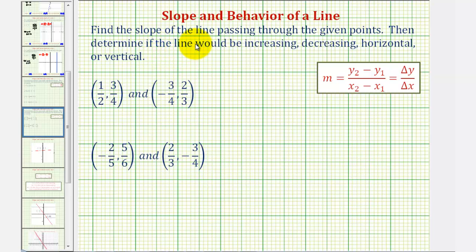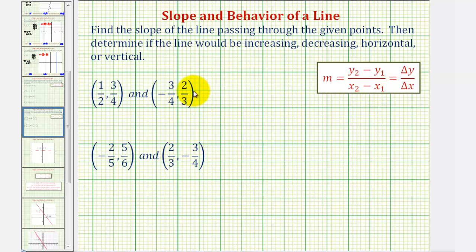We want to find the slope of the line passing through the given points, then determine if the line would be increasing, decreasing, horizontal, or vertical. To find the slope of a line given two points on the line, we want to find the change of y and divide by the change of x, which means we'll find the difference of the y coordinates and divide by the difference of the x coordinates.